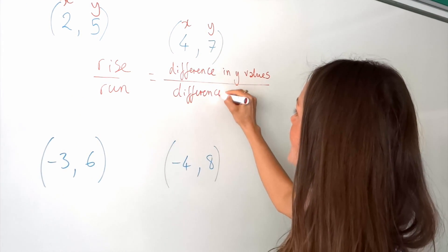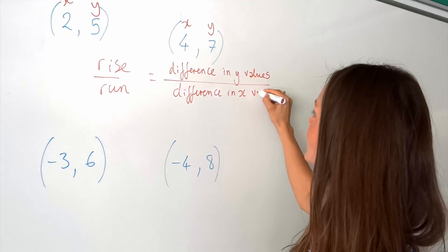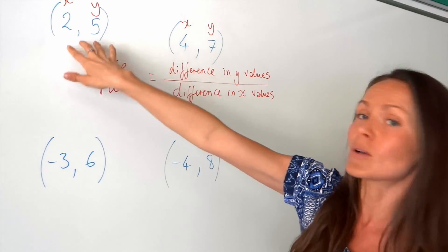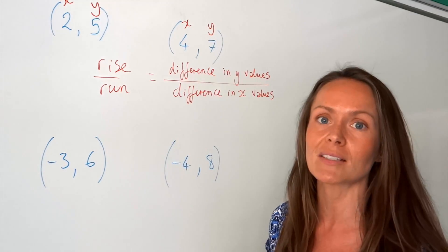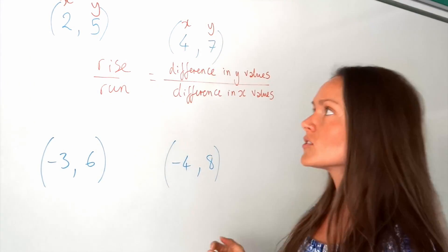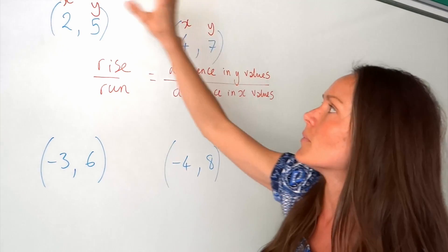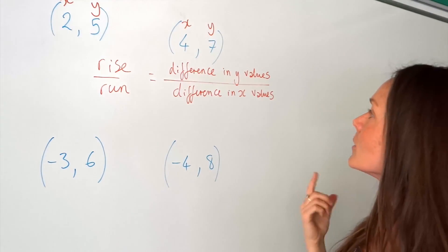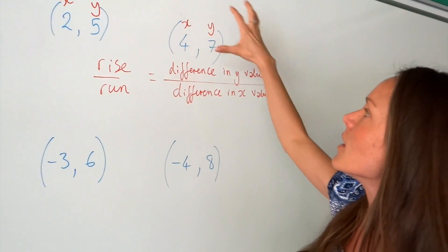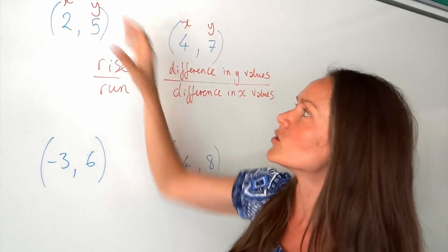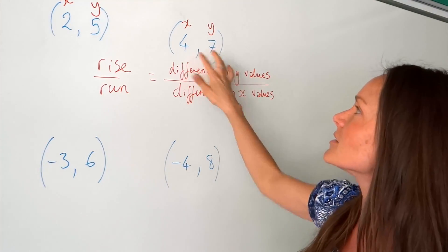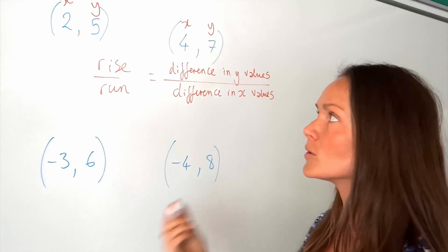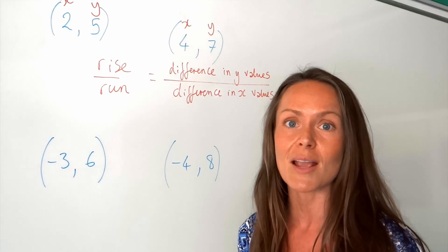It doesn't matter which way round we subtract the coordinates. We could do this set minus the other, or the other way round — it doesn't matter, as long as you're consistent. If you choose to do this one minus this one, you have to do the same for both the x and the y. In this question I'm going to do the bigger numbers minus the smaller ones to avoid negatives, but you'll get exactly the same answer either way.